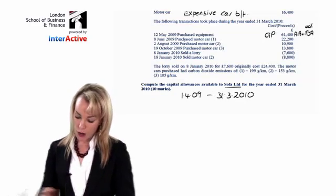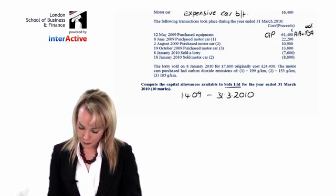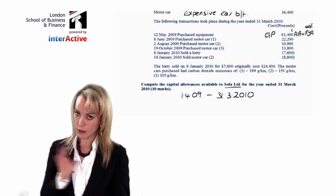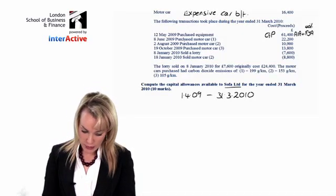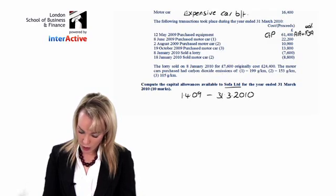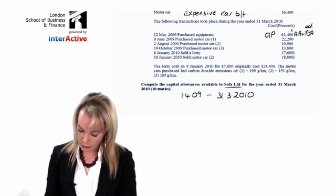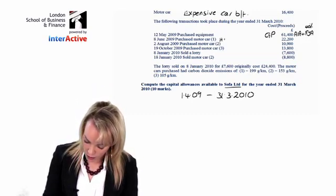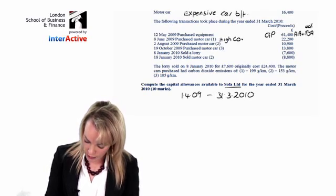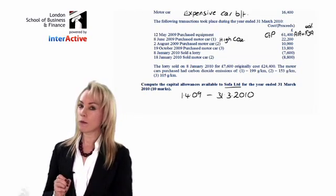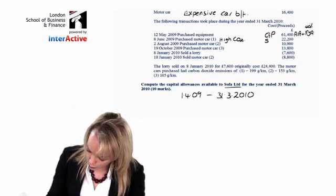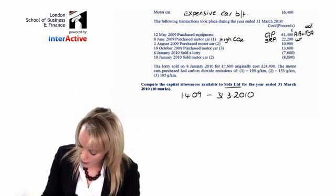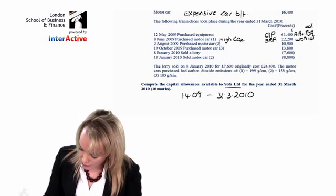The next one is motor car number one, which is newly being bought. It has a carbon dioxide emission of 199 grams, which means it's a high emission car — more than 160 grams. Do you remember that one goes into the special rate pool? So I'm going to write 'special rate pool' next to it. That one gets no AIA, but only the WDA at 10%.